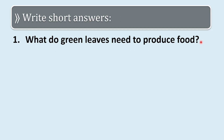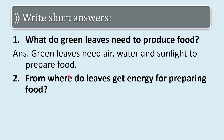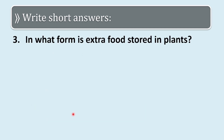Short answers. First question: what do green leaves need to produce food? Green leaves need air, water, and sunlight to prepare food. Second question: from where do leaves get energy for preparing food? Leaves get energy from the Sun for preparing food.